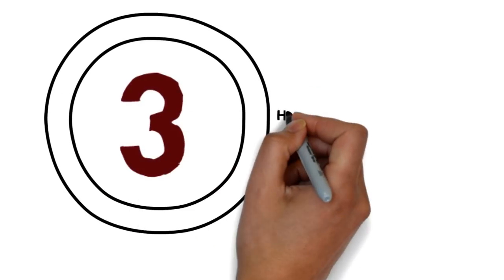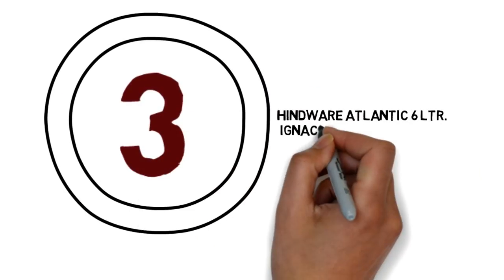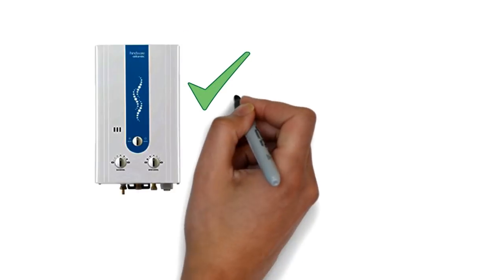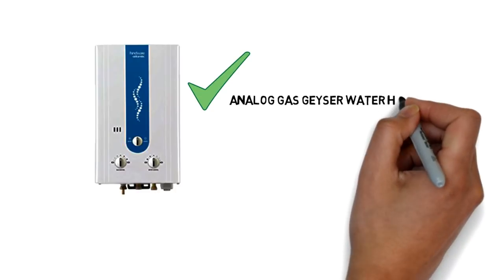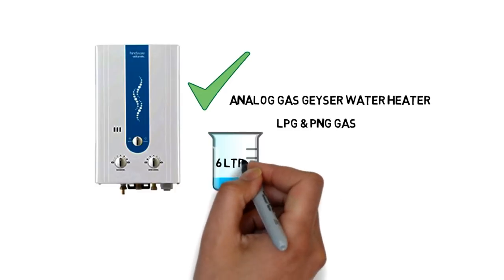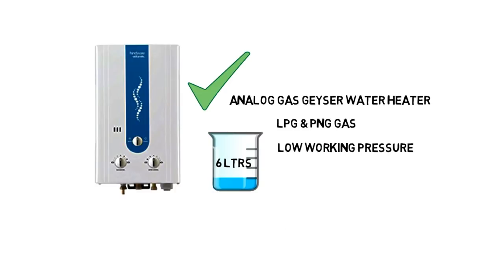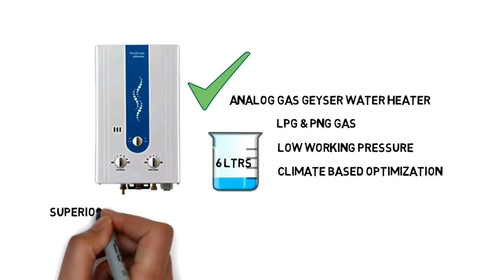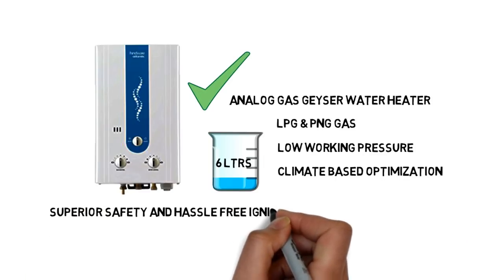Number 3: Hindouan Atlantic 6-Litre Ignacio 6L Analog Gas LPG & PNG Geyser Water Heater. Hindouan Atlantic Ignacio is the best analog gas geyser water heater in India. It runs with LPG and PNG gas. It has capacity of 6 liters. It has low working pressure and climate-based optimization. It provides superior safety and hassle-free ignition.